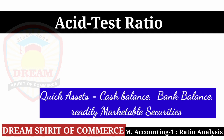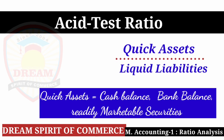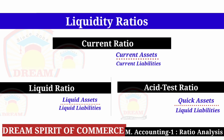Now Acid Test Ratio: Acid Test Ratio equals Quick Assets divided by Liquid Liabilities. Quick assets include cash balance, bank balance, and marketable securities that can be sold on the spot. These are assets that are already cash or can be converted to cash in the very short term — these are called Quick Assets. Friends, in liquidity ratios there are three ratios: first Current Ratio (Current Assets / Current Liabilities), second Liquid Ratio (Liquid Assets / Liquid Liabilities), and third Acid Test Ratio (Quick Assets / Liquid Liabilities).